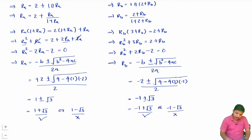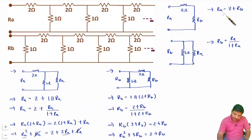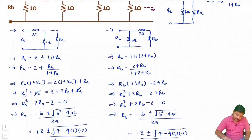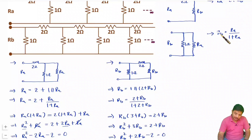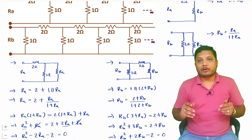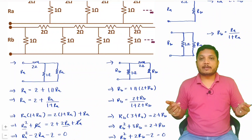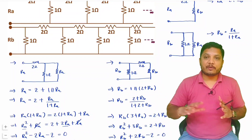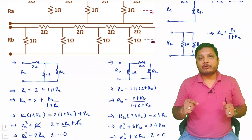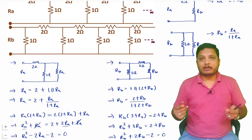You can verify: RA = 2 + RB → 2 + (−1 + √3) = 1 + √3, which matches RA. So that is satisfied. Similarly, you can cross-check RB = RA / (1 + RA). I hope it is now clear how we can verify answers and solve problems where resistances are connected to infinity. Thank you so much for watching this video.